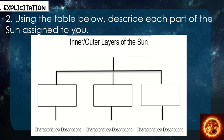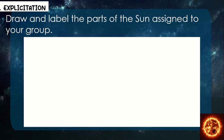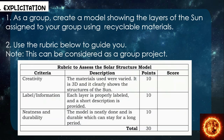Using the table below, describe each part of the sun assigned to you. As a group, create a model showing the layers of the sun assigned to your group using recyclable materials. Use the rubric below to guide you. Note: this can be considered as a group project. Criteria: creativity, label or information, neatness, and durability.